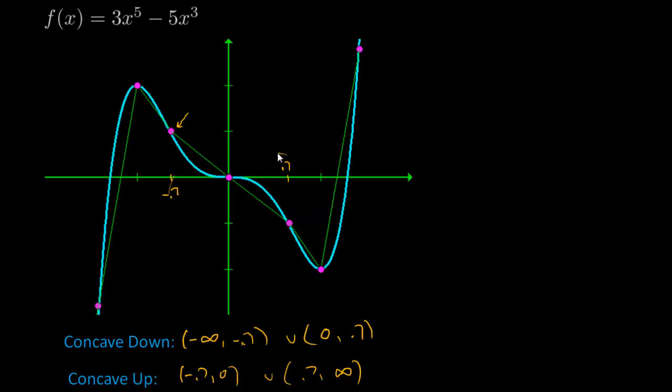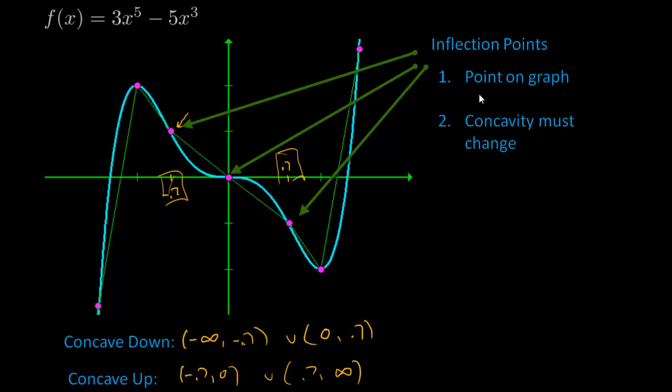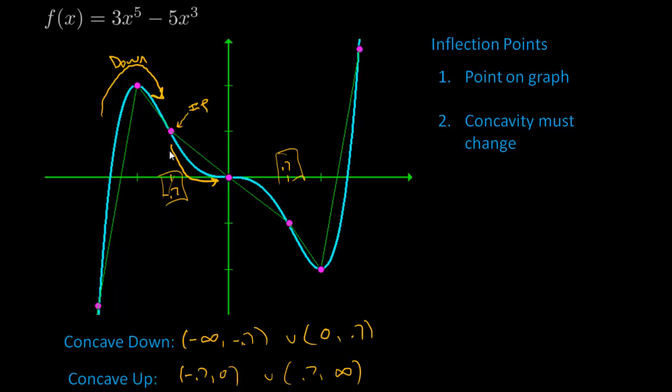So what are these points here called? Because they seem special. Because they're showing up in these intervals. Those are called inflection points. In order to be an inflection point, you need to be a point on the graph. So you must exist. It can't be an asymptote or anything like that. And your concavity must change there. So again, notice here we are concave down. But then after this point, which I'm going to call inflection point, we are now concave up. So it's a change in concavity and we're a point on the graph. That means this also is an inflection point.